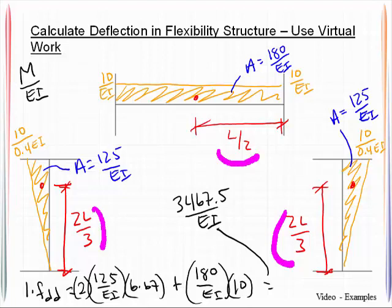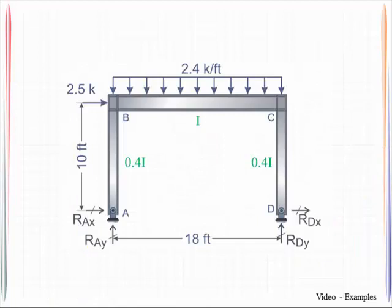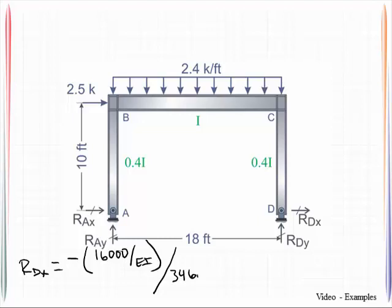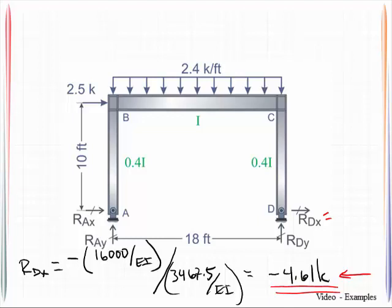I am finally prepared to plug these back into the compatibility equation to solve for RDX. So that was my delta D. I need to divide that by my flexibility coefficient. 3467.5 over EI. This will be equal to negative 4.61 kips. Now what does the negative mean? Negative means I had assumed the wrong direction. So that means it is acting towards the left. So I am just going to write this in as negative 4.61.